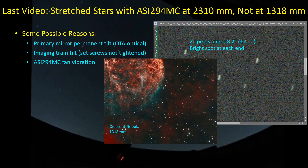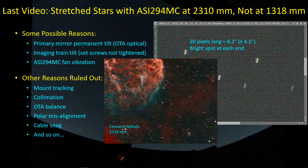A lot of you had comments to that last video that I might want to check the fan vibration. It turns out that's been a problem for a lot of people. There were a lot of other issues that I had ruled out — mount issues, collimation, etc. It seems like the problem had to be something optical within the tube, the imaging train, or perhaps this fan vibration problem.